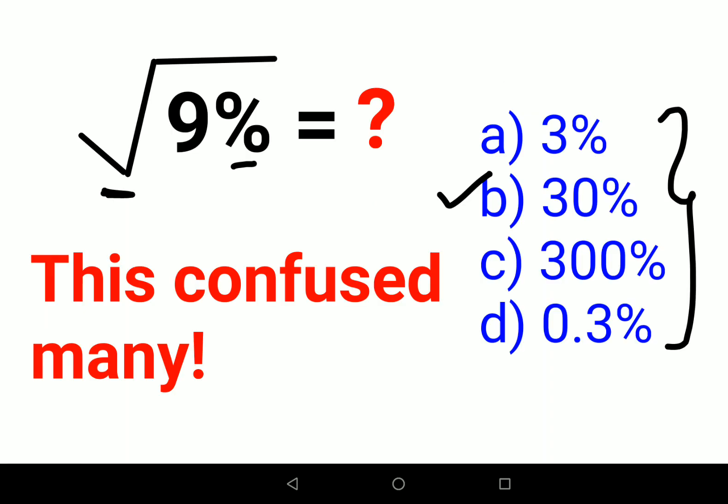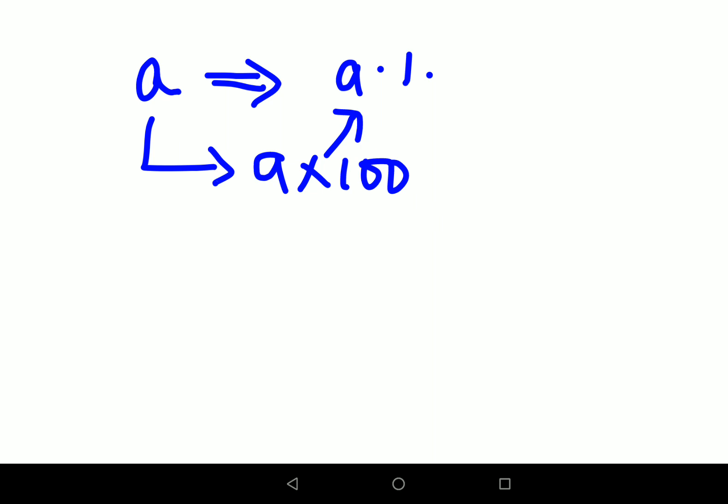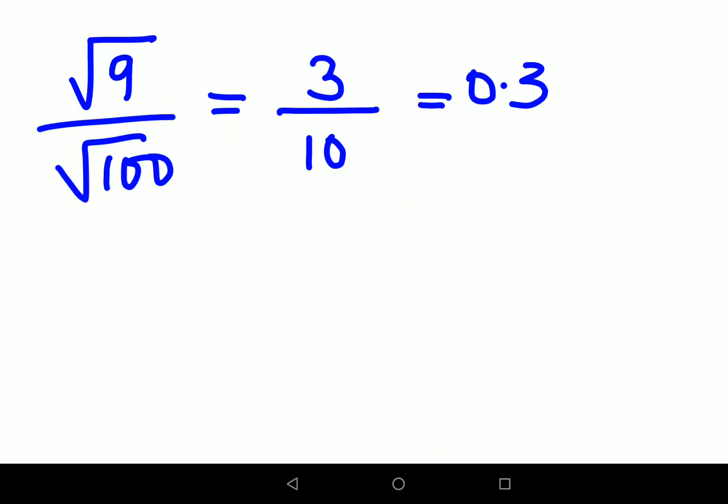But unfortunately, the answers are given in terms of percentage. One very important thing to remember: when you want to convert any number to a percentage, you multiply that number by 100 to get the percentage value. We got 0.3, but since we want the answer in percentage, we'll multiply 0.3 by 100.